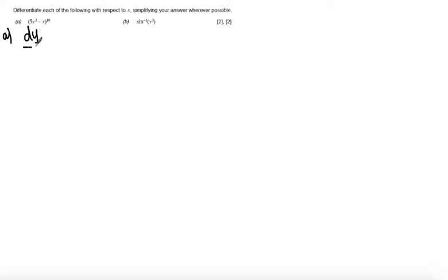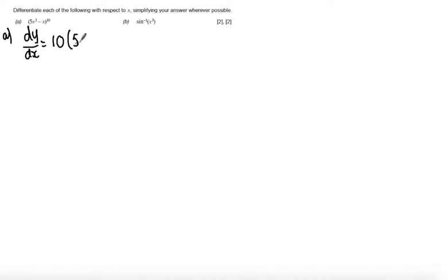This is an example of a function inside a function, so we have to use the chain rule to answer this question. The inside function is 5x cubed minus x, and the power of 10 is the outside function. Let's start by differentiating the outside function and bringing the power of 10 down. The function inside the bracket remains untouched, and we decrease the power by 1.